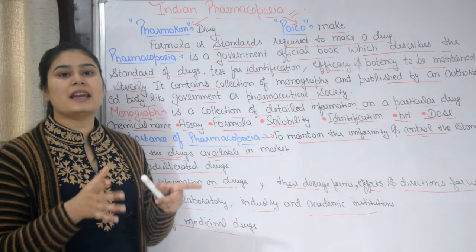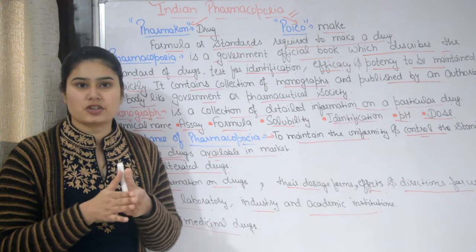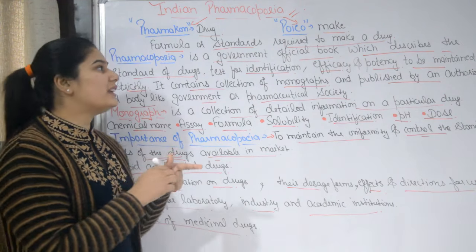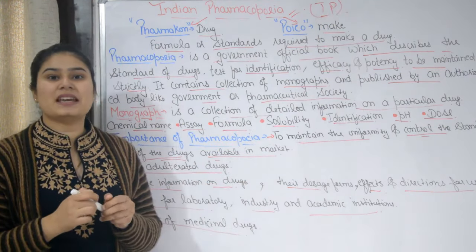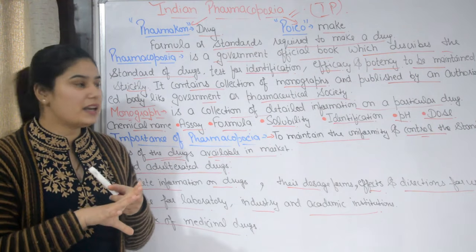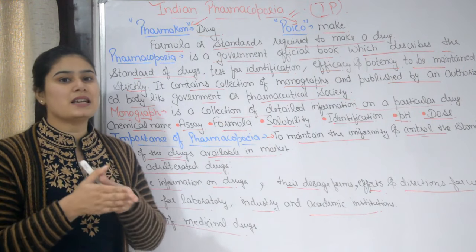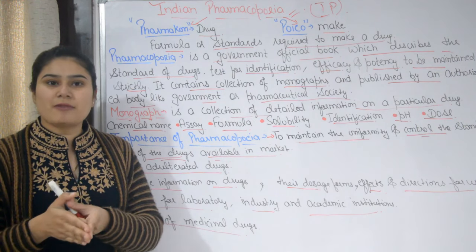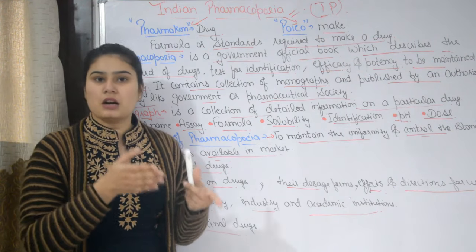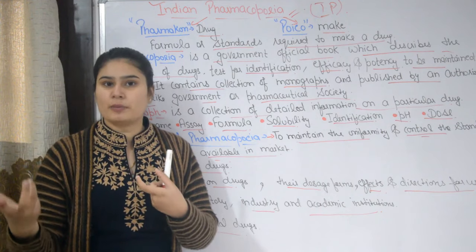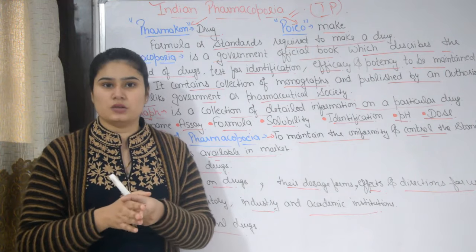Now we will discuss Indian Pharmacopoeia, that is IP. India's official government book which contains a collection of all drugs is the Indian Pharmacopoeia, called IP. You may have seen 'IP' written on medicines — it means the drug is made as per Indian Pharmacopoeia. Similarly, British Pharmacopoeia is BP, United States Pharmacopoeia is USP, and there are also Japanese and European pharmacopoeias. Countries without their own pharmacopoeia follow another country's pharmacopoeia, like British Pharmacopoeia.